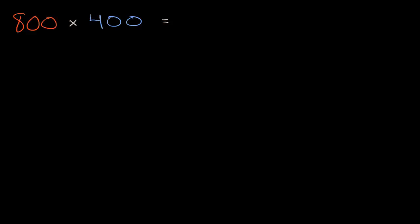In this video, we're going to think about multiplying or strategies for multiplying numbers that are expressed in terms of hundreds or thousands or tens. We see an example right over here: 800 times 400. Like always, I encourage you to pause this video and see if you can work this out on your own.